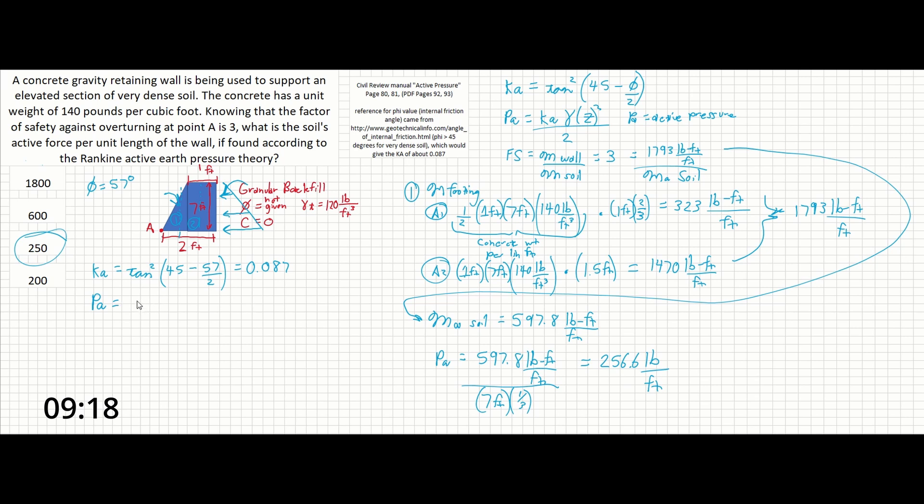So next, we would calculate PA. So we would have 0.087, which is our KA value, times the gamma of the soil being 120 pounds per cubic foot. And then the depth Z of the soil, which we have as 7 feet squared, according to this equation up here, all over 2. And that should calculate out to be the same number here. So if I could do this in my calculator very quickly, I'm getting 256.6 pound feet. So that would have been how you'd calculate PA.